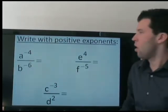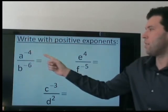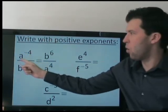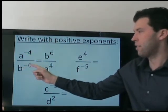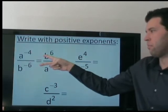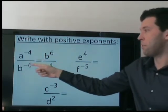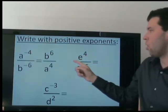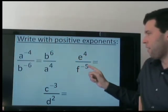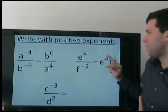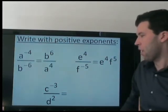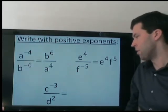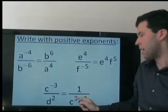So applying that rule, we can rewrite this as 1 over a to the 4th. And this is already 1 over b to the negative 6th, so we can rewrite it as its reciprocal but to the opposite exponent. This is already positive, so 1 over f to the negative 5th can be written as f to the positive 5th. This is fine. This is 1 over c cubed — again, we are dividing by c three times.